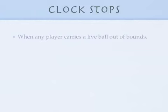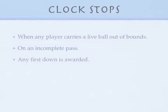Now let's talk about when the clock stops. When any player carries a live ball out of bounds, the clock stops, and the clock does not start until the next legal snap, regardless of which team snaps the ball. The clock also stops on all incomplete passes; again, the clock would not start until either team legally snaps the ball. The clock also stops to award any team a first down. If the ball carrier carried the live ball out of bounds, the clock would not start until legally snapped. But if the runner ends inbounds, we stop the clock to award the series, then start the clock again on the ready for play.